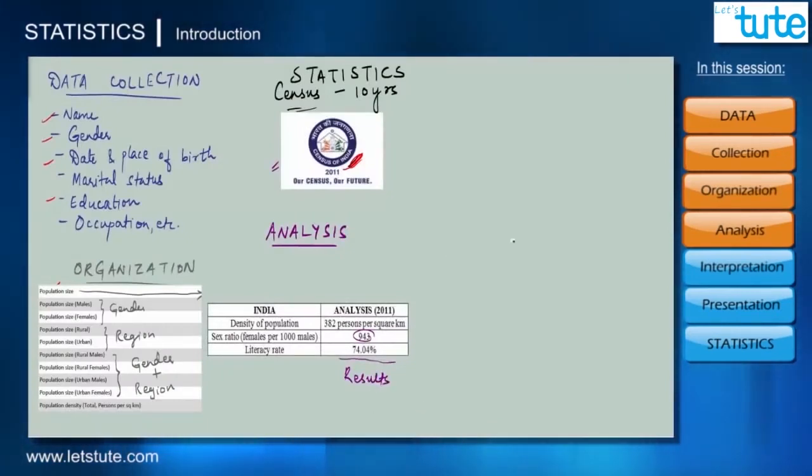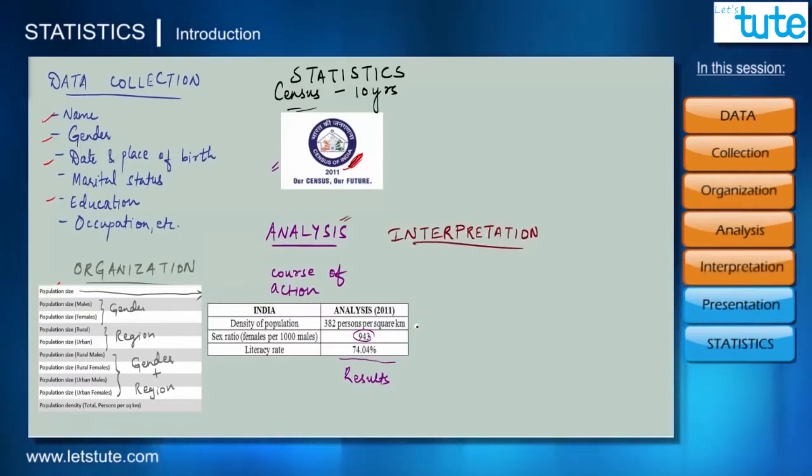The analysis of data helps us to determine the best course of action we can take, and then we can base our decision on how we interpret this analysis. So I can say India is a densely populated country with a low sex ratio and the literacy rate is also not that great, but I can improve this interpretation.